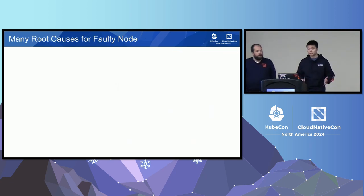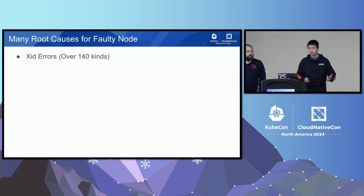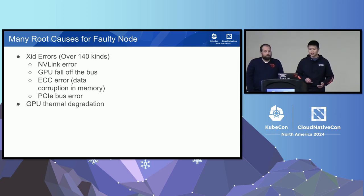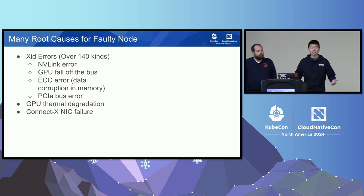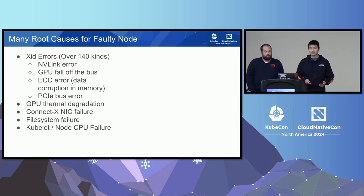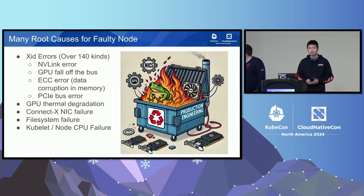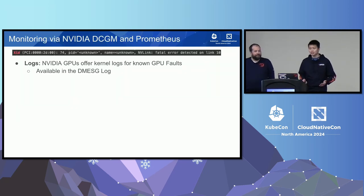A small number of node failures can disproportionately affect a large run. There's a variety of failures — some are GPU errors that manifest as XID codes, and there are over 140 different kinds. The most common are NVLink errors — the high-speed interconnect between GPUs — GPU fall-off-the-bus errors where the GPU is disconnected from the PCIe bus, ECC memory errors indicating data corruption, thermal degradation from overheating, ConnectX NIC errors, file system failures, kubelet hung issues, and CPU out-of-memory. These all contribute to very heavy on-calls for production engineers, so we need precise monitoring to gain real-time insights into GPU health and performance.